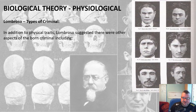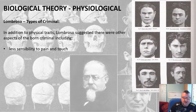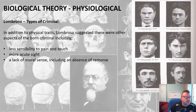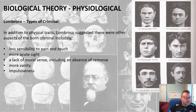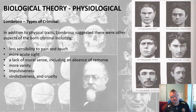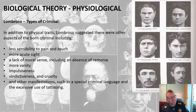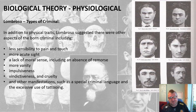In addition to physical traits, Lombroso suggested other aspects of the born criminal: less sensibility to pain and touch, more acute sight, a lack of moral sense including an absence of remorse, greater vanity, impulsiveness, and being vindictive and cruel. Other manifestations included use of special criminal language and, as mentioned before in connection with pain insensitivity, excessive use of tattoos.